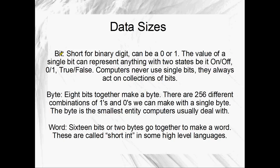First of all I want to look at data sizes, just so that we're all on the same page. A bit is short for a binary digit, and that can be a zero or a one. That's the very smallest amount of information in a computer. A byte is a collection of eight bits together, and if you get eight little zeros and ones together, there are 256 different possible permutations.